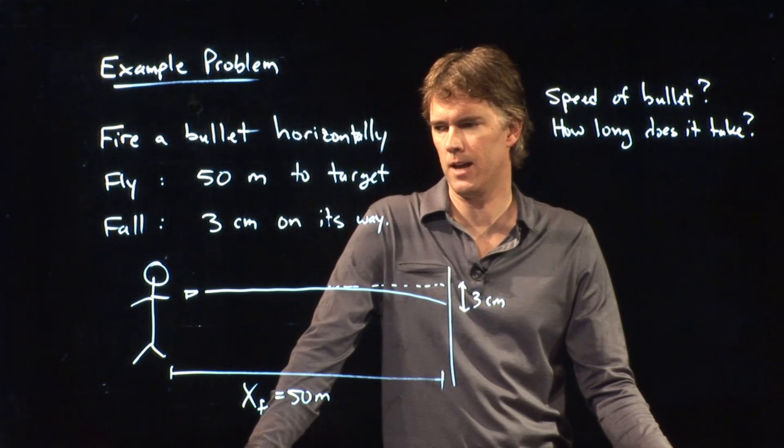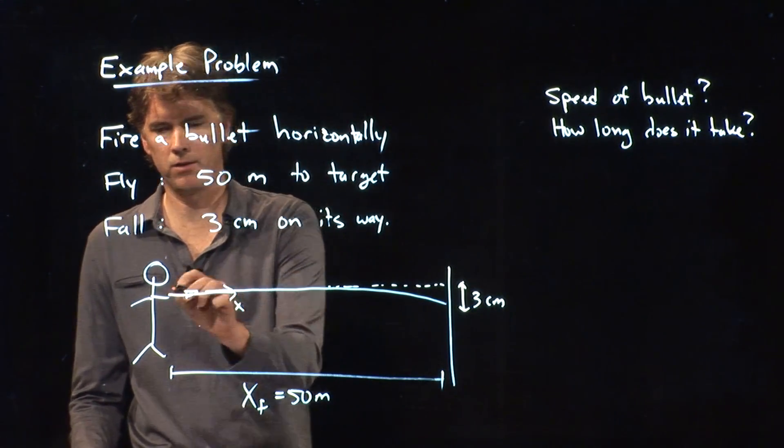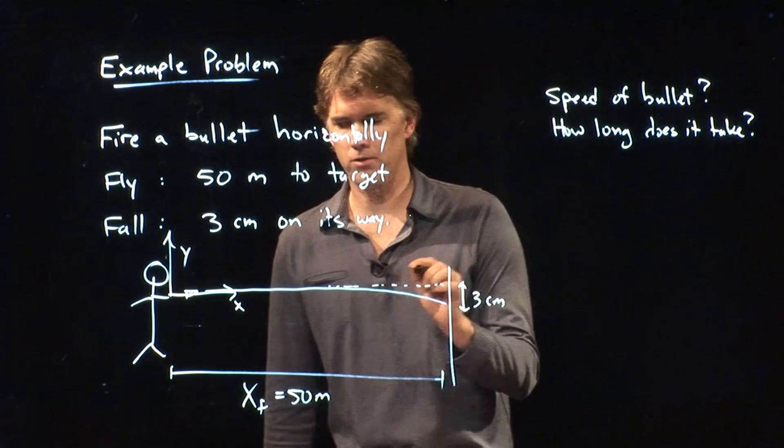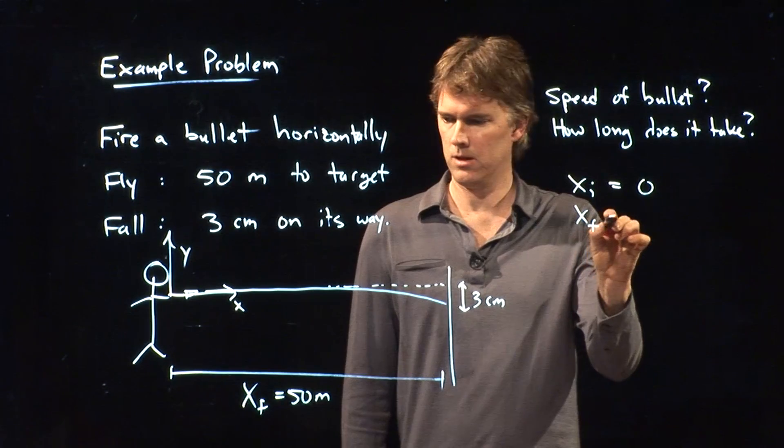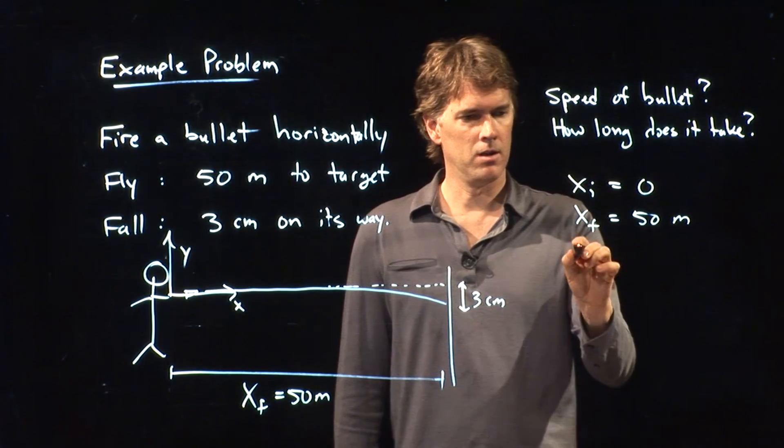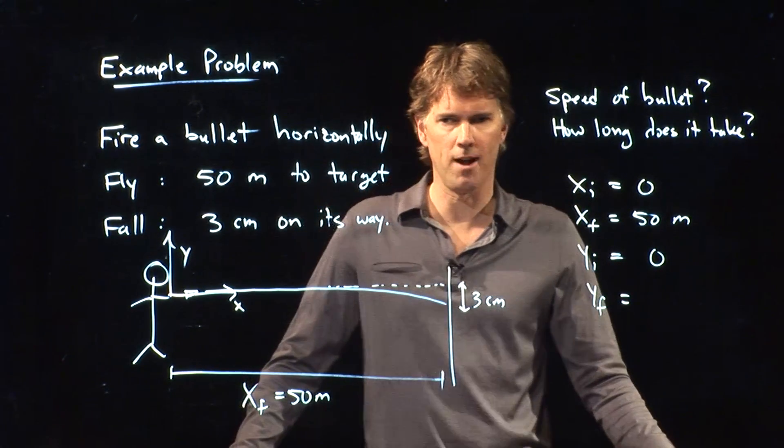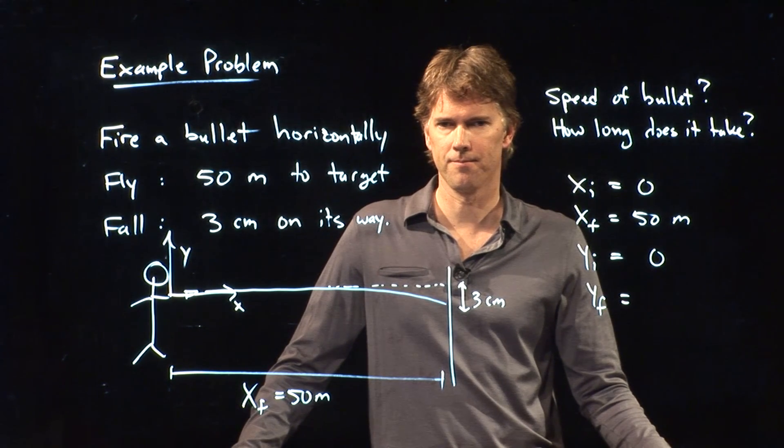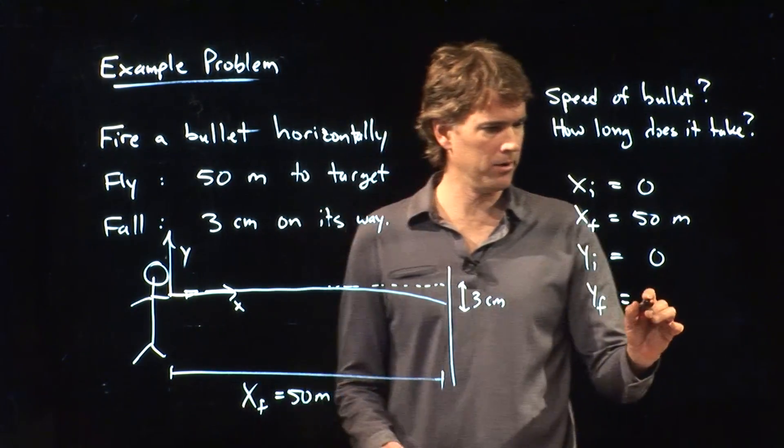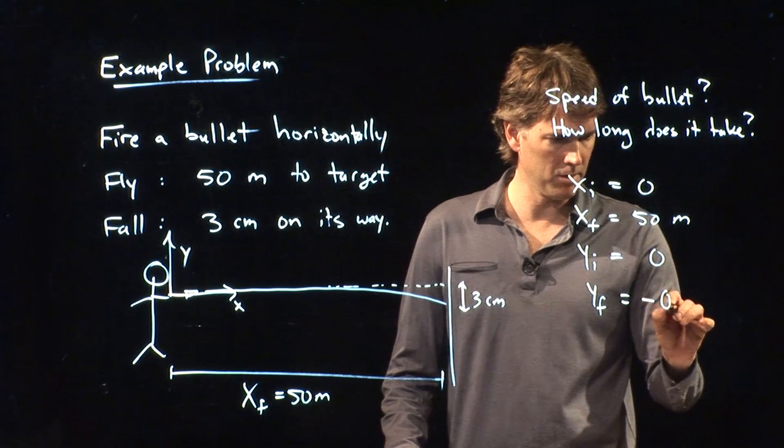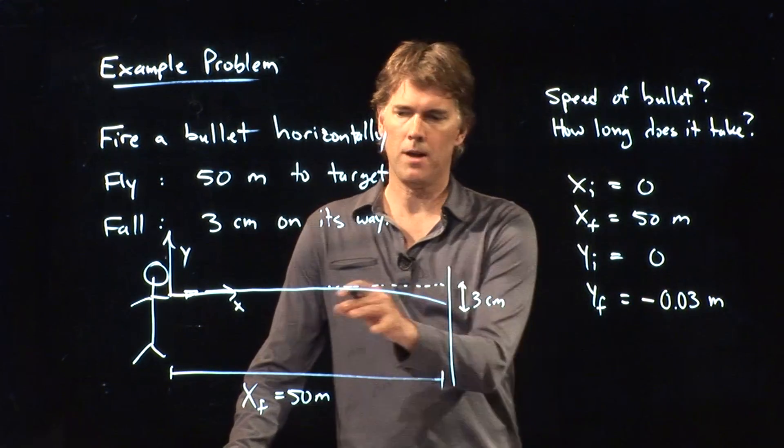So, first off, we need to draw a coordinate system, and why don't we say that the coordinate system is right here. This is x, this is y, and if that is x and y, then we can say x initial is 0, x final is 50 meters, y initial is 0, y final is what? What is y final equal to? Negative 3 centimeters? Negative 3 centimeters. So if we do that in SI units, it would be negative 0.03 meters.